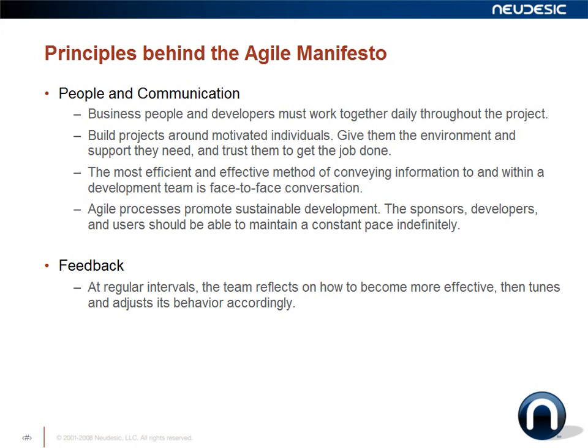In agile, we want to promote a sustainable development environment where you can maintain a constant pace indefinitely. You don't want to replicate the project death march where everyone is working 70 to 80 hours a week for months and months. That original troubled project I mentioned was on a death march for two years — there was no morale, people could not even think or process. In agile, you want to focus on reaching a constant, fairly high pace that can be sustained indefinitely.